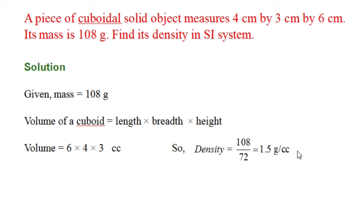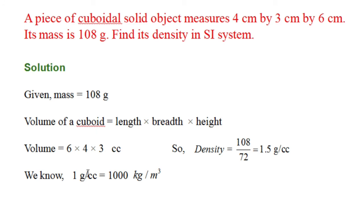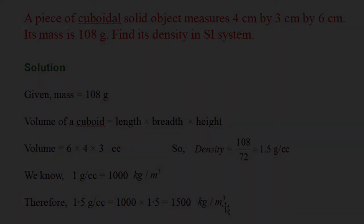But again you have to find out the density in SI system. So remember, 1 gram per cc is equal to 1000 kg per meter cube. Therefore, 1.5 gram per cc is equal to 1000 multiplied by 1.5, that is 1500 kg per meter cube. This is its density in SI system.